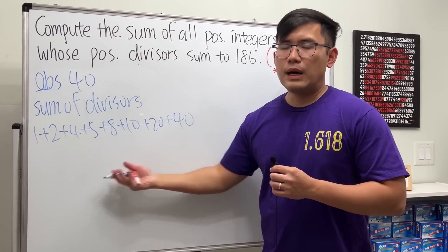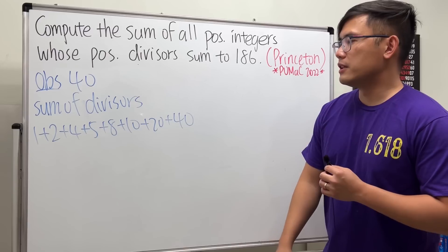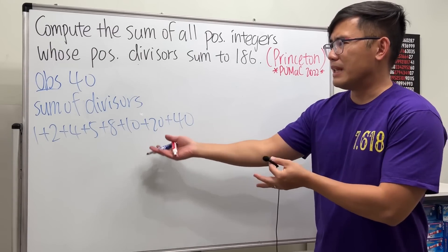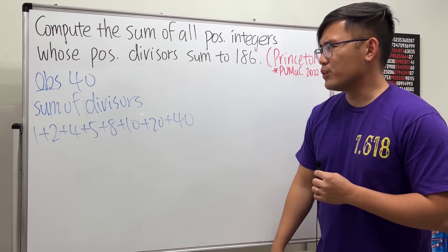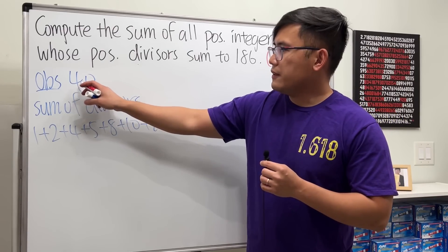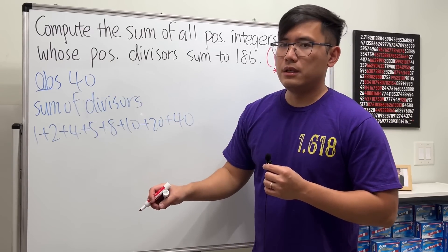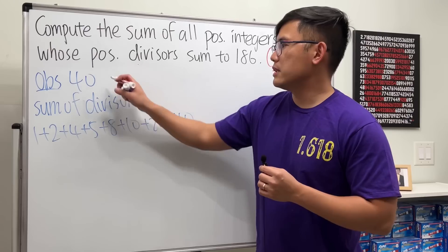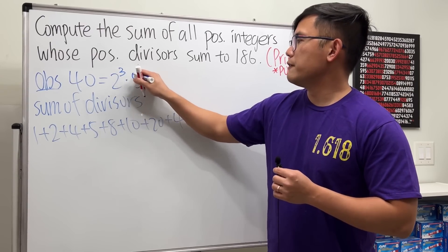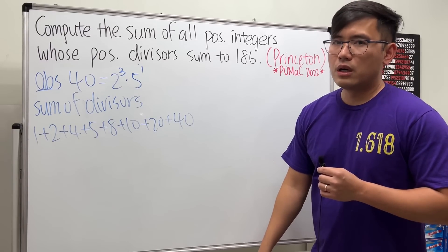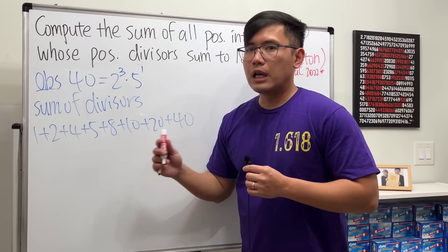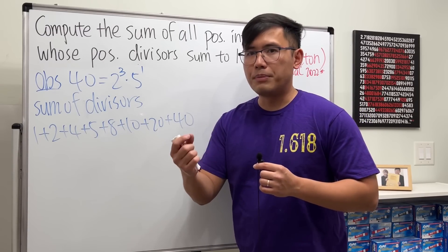I'm not just going to add them up like that — I want a much better way to do this. If you look at 40, we can prime factor it and that gives us 2 to the third power times 5 to the first power. All the divisors can be written in the form 2 to some power times 5 to some power.